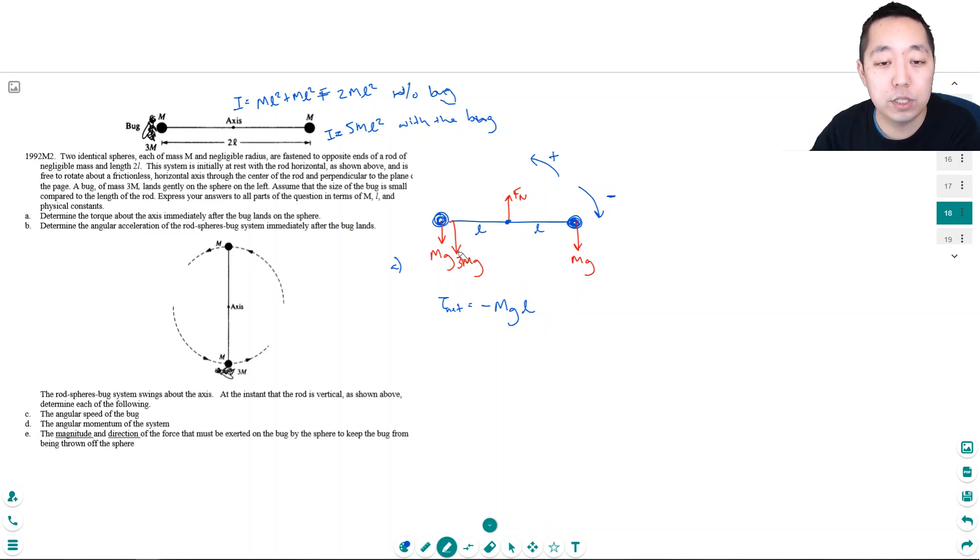These forces cause it to rotate counterclockwise, so I'm going to add them. I have this one: mg·l, and then I have 3mg·l from the mass of the bug. If I add these all together, I get 3mg·l. So that's my net torque.